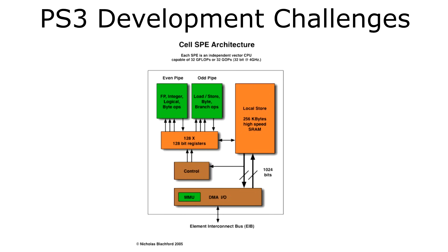Each SPE contained 256 kilobytes of embedded SRAM for instruction data, called local storage. Each SPE could even support up to four gigabytes of local store memory. However, the local store didn't really operate like a normal cache, since it's not transparent to software and didn't contain any hardware structures that predict what data to load. It did contain a 128-bit, 128-entry register file, which allowed it to store data. At one time, an SPE could operate 16 8-bit integers, 8 16-bit integers, and 4 32-bit integers. The SPU was abstracted in the hardware design such that it couldn't access system memory, which is why the DMA and memory flow controller were set up this way.